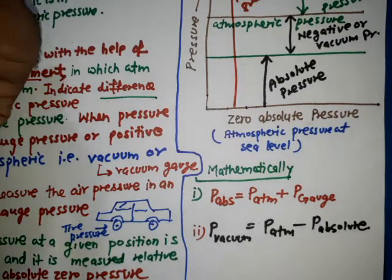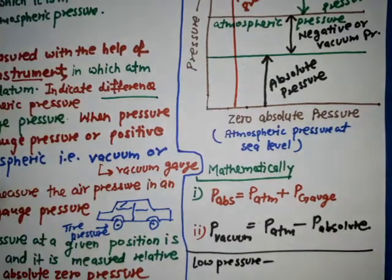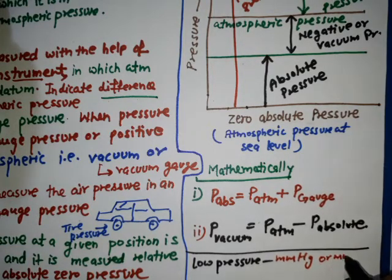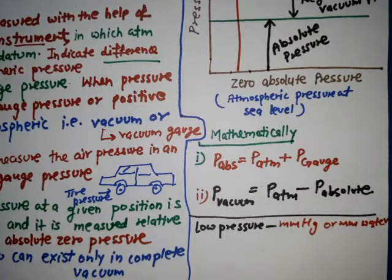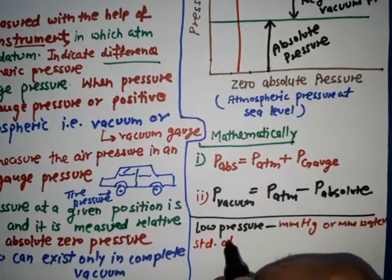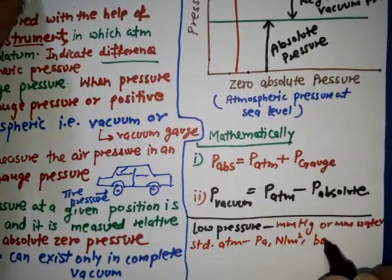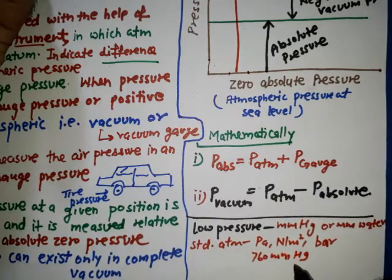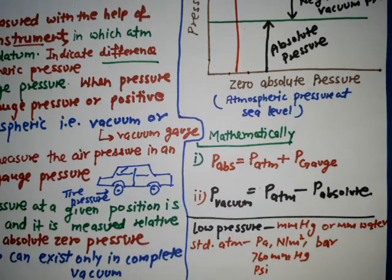Low pressures are measured in terms of mm of Hg or mm of water. Standard atmospheric pressure has the following equivalent values: it is measured in Pascal, Newton per meter square, bar, 760 mm of mercury, and also in psi. These are the parameters in which it is measured.